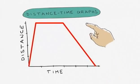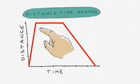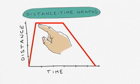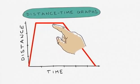So what can we learn from a distance-time graph? The slope of a graph tells us a great deal. If the line is horizontal, then no distance is travelled, so the object must be stationary.